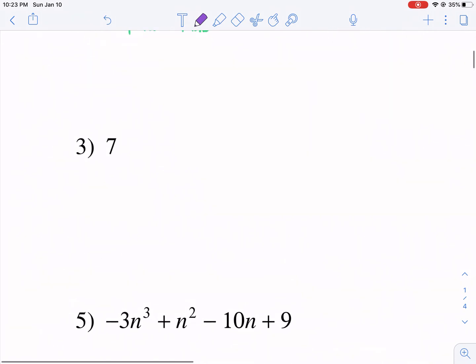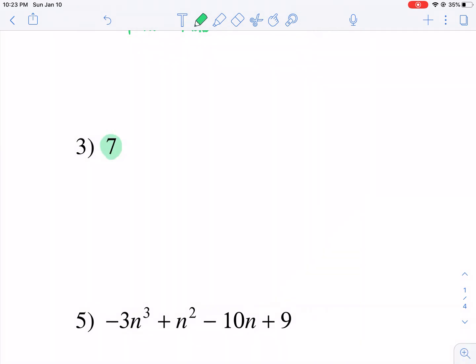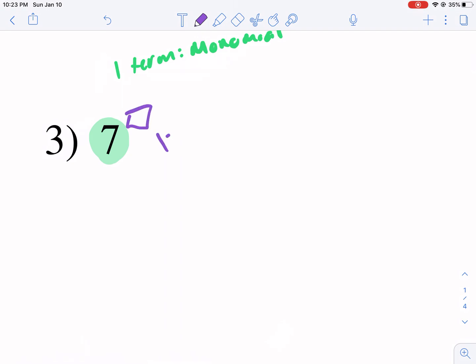Moving on to number three, we see again, there's one term. And I know you're thinking it's just a seven. Well, that's a term. So this is one term. That makes it monomial. Now degree, this is where it gets a little tricky, but it's actually fairly simple. Notice how there's no exponent and there's not even an x or y or anything. So how do we figure out what the degree is?